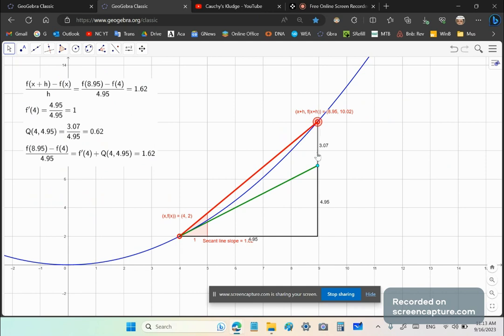So the slope of the difference is given by 3.07 over 4.95 and the slope of the tangent line is given by 4.95 over 4.95, which is 1. As expected because we're taking the derivative at x equals to 1.